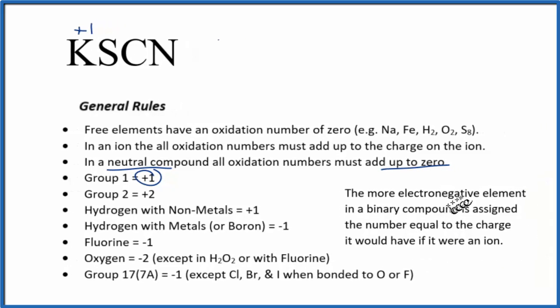It says the more electronegative element in a binary compound, and this isn't binary but we'll use this rule, should work, gets the number equal to the charge it would have if it were an ion. So we could figure out which is the most electronegative and then figure out what charge it would have as an ion.